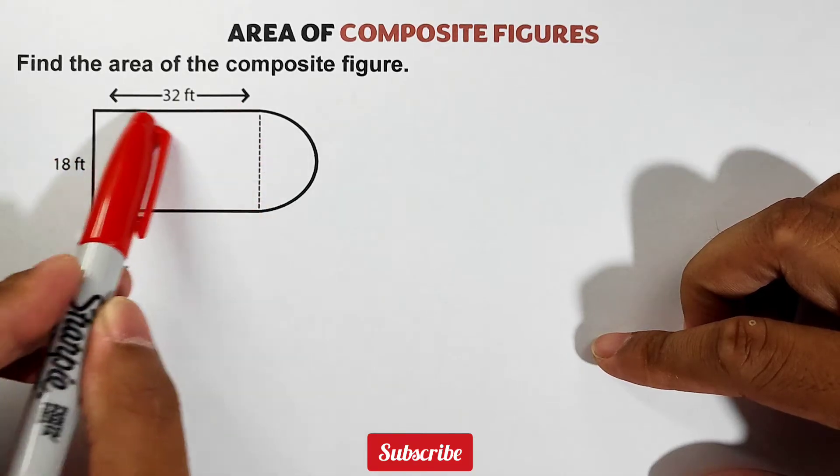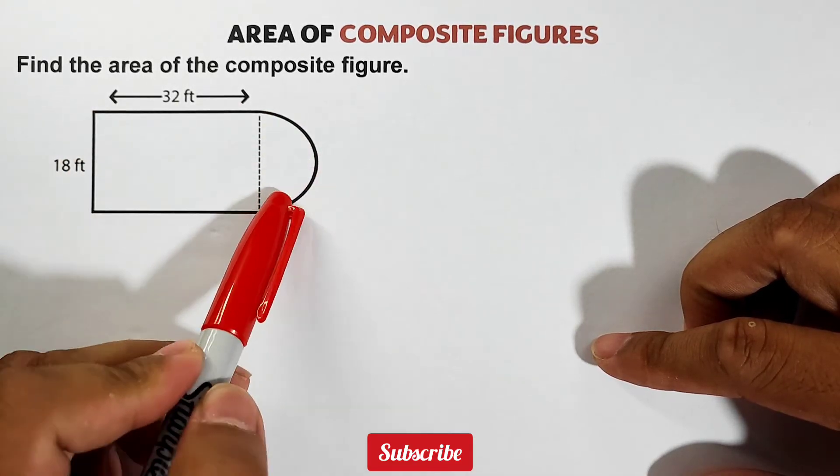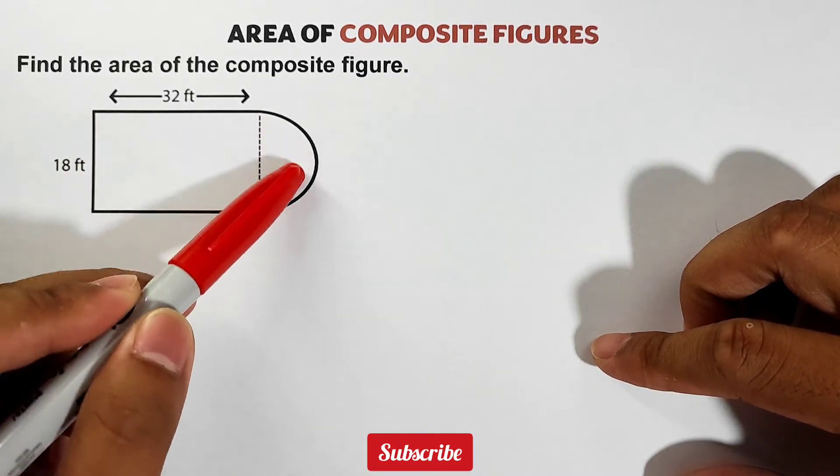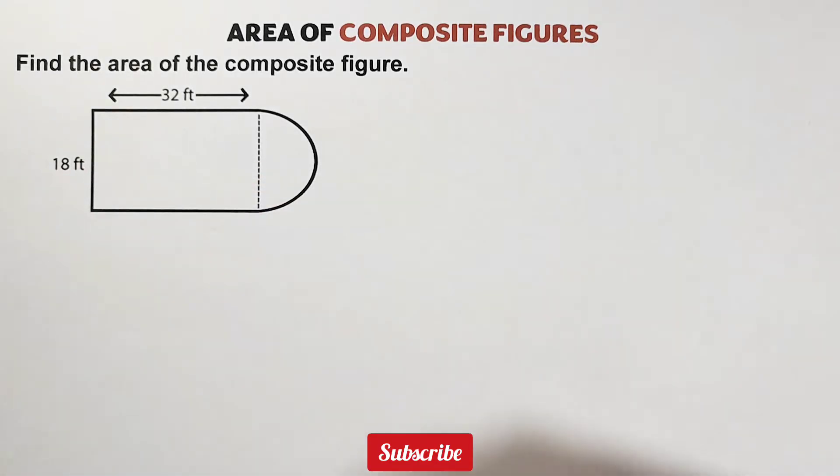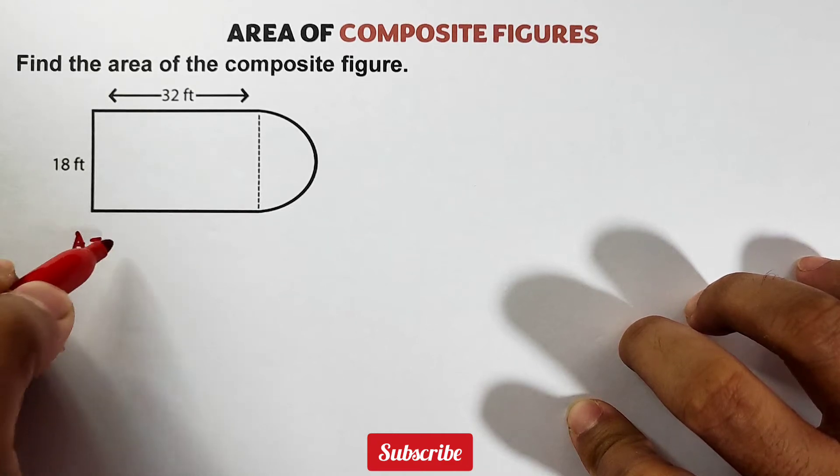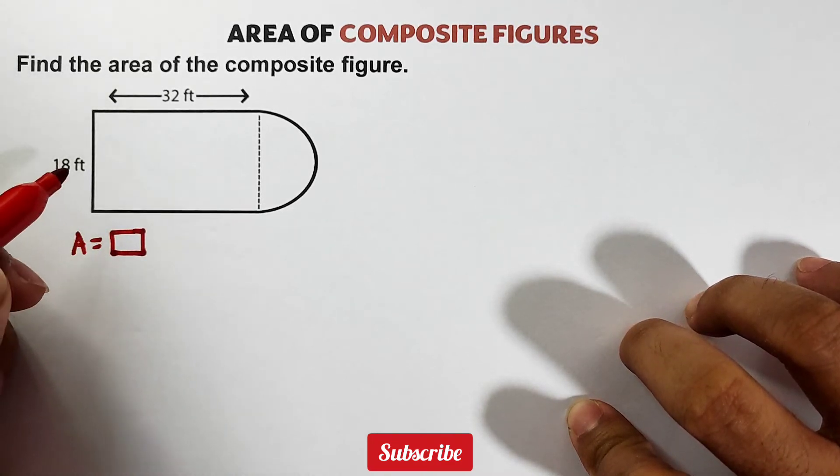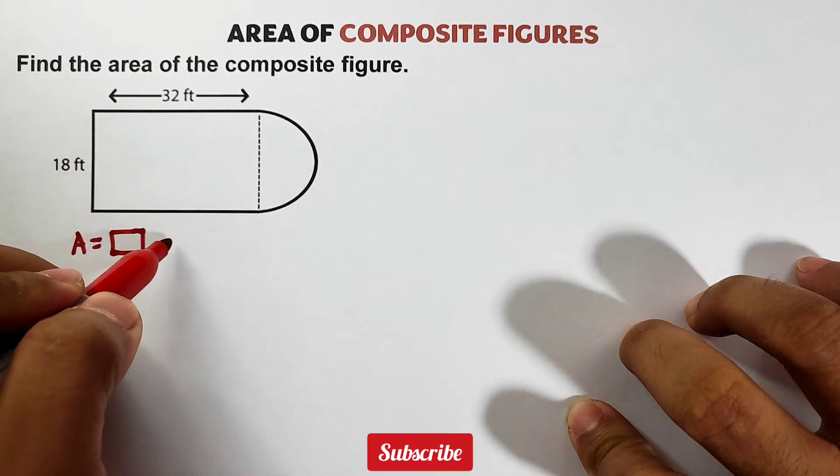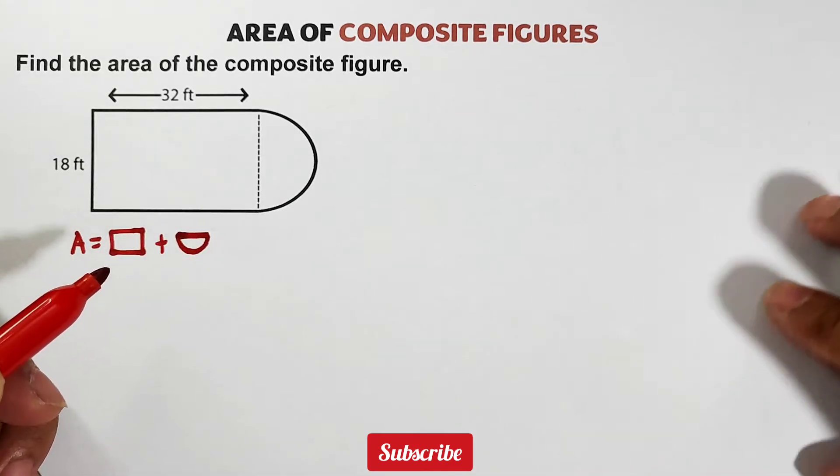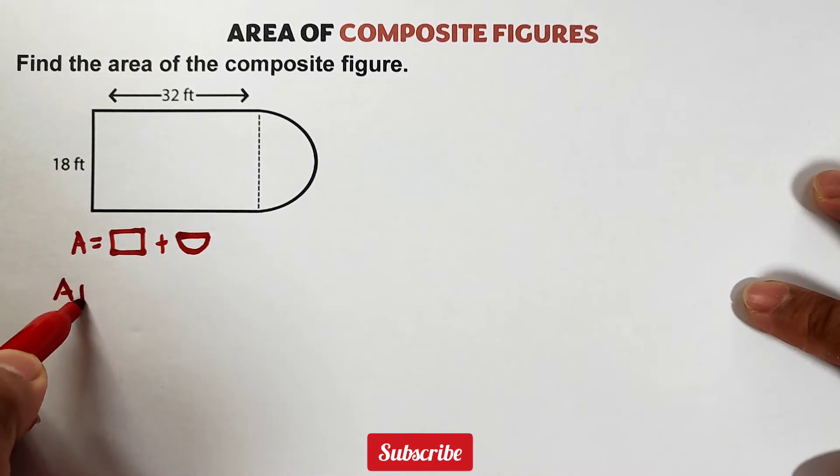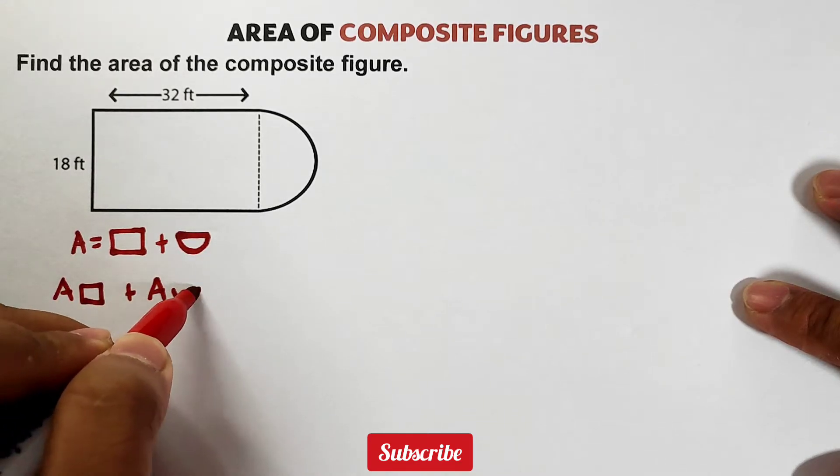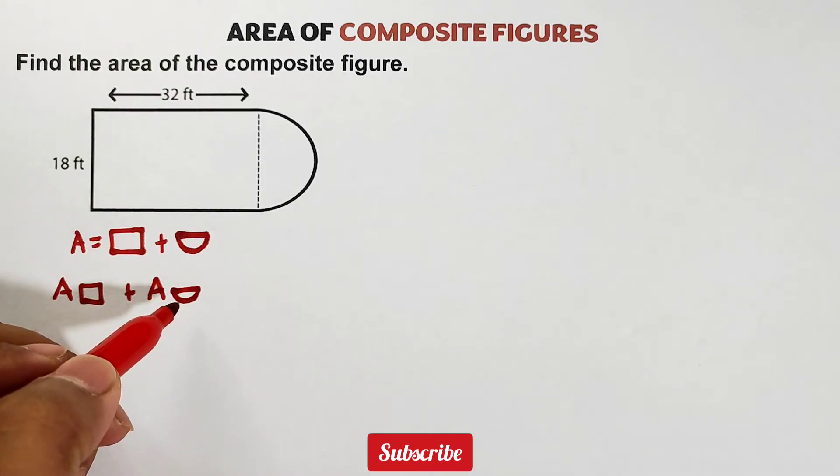So check this out. This composite figure is composed of a rectangle and half circle. Now, when we talk about area, we are trying to calculate what's inside these figures. So to calculate that, we need to get the area of the rectangle, then add the area of the semicircle. Calculate the area of the rectangle plus the area of the semicircle.